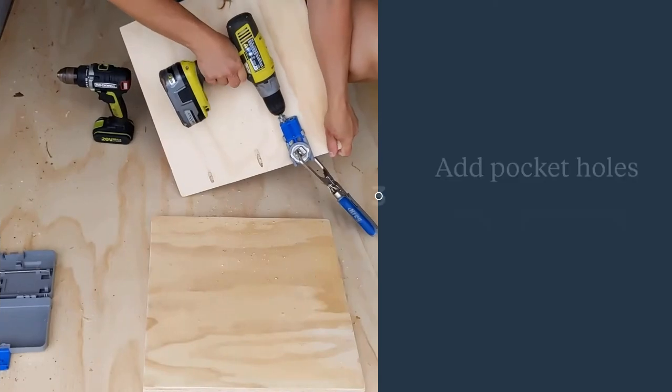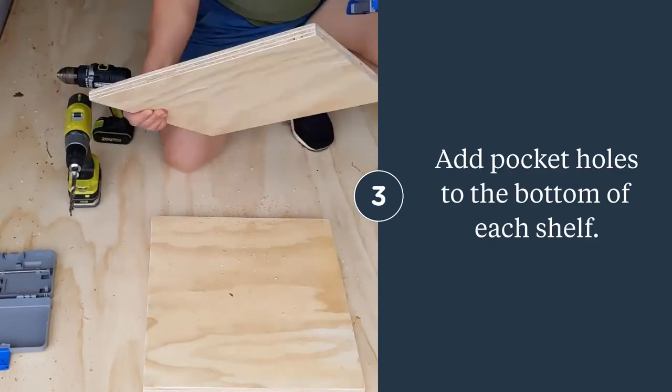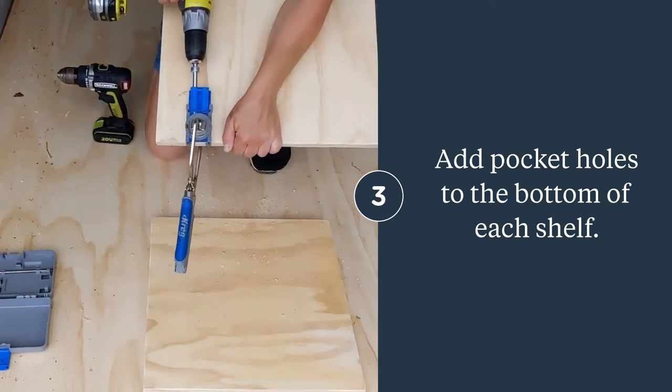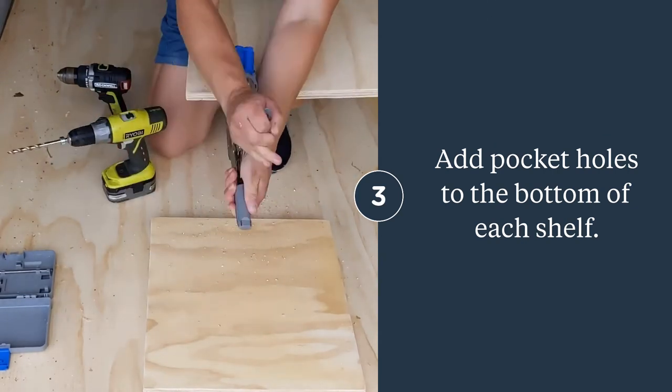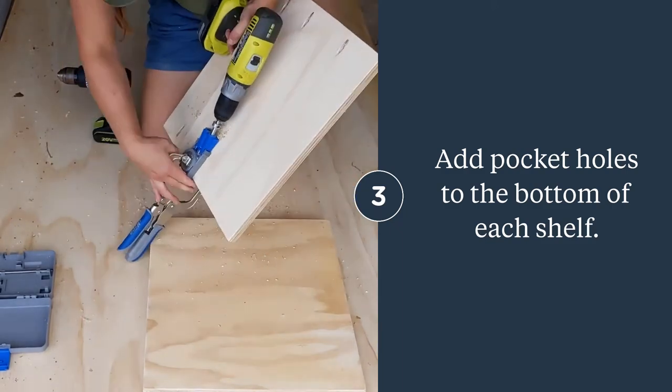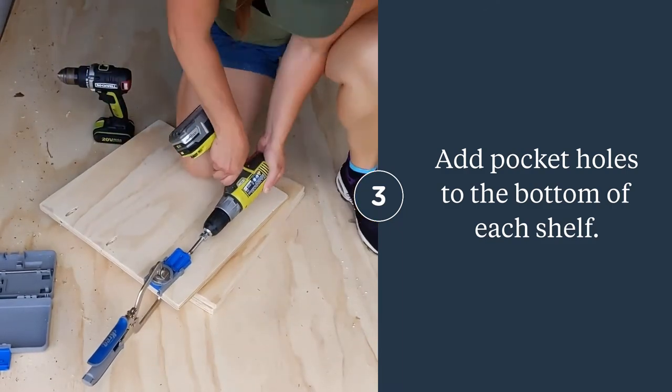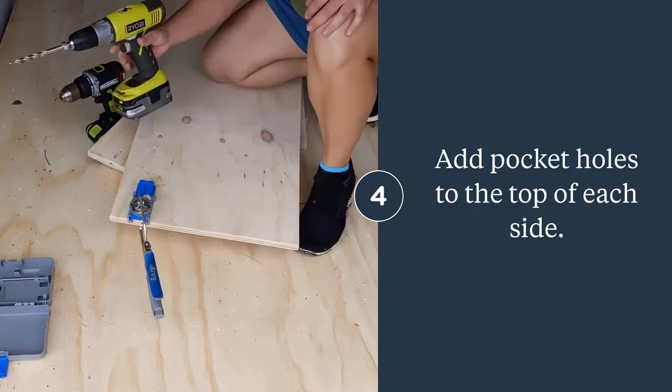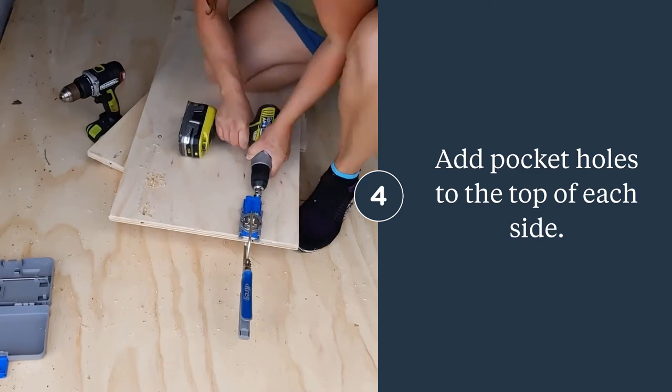I used pocket holes to attach each shelf to the side walls of the printer cabinet. I also added pocket holes to the top of the sides to attach the butcher block.